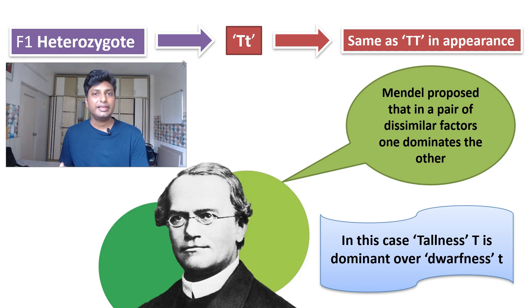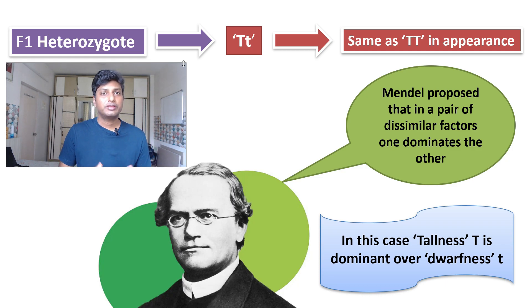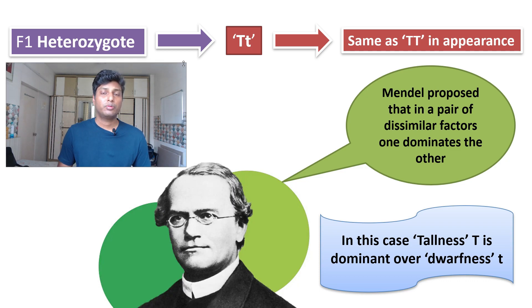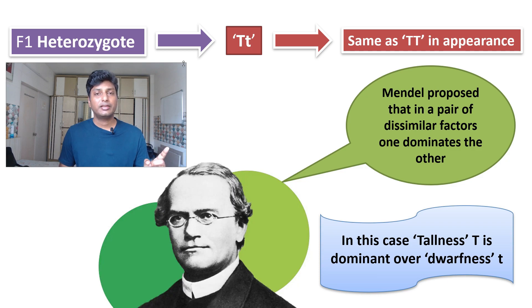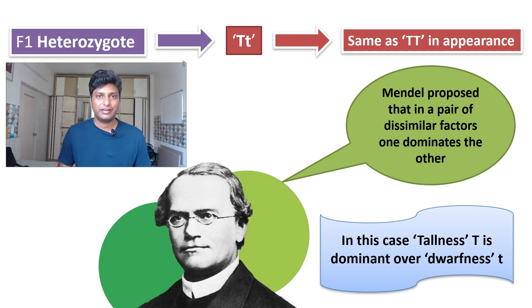In the case of Tt, capital T is dominant over small t, and hence the plant is tall. Like this, Mendel performed cross pollination by considering all seven contrasting characters, and in all cases one character was always dominant over the other. That is why he called these the contrasting characters.